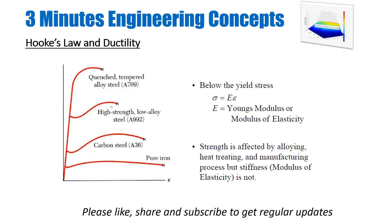Looking at different materials with different alloying elements, heat treating processes, and manufacturing processes, you get different types of curves. These factors change the ductility of the material — meaning the failure strain at the fracture point — and strongly influence yield strength. However, you also find that stiffness is not affected by these processes.